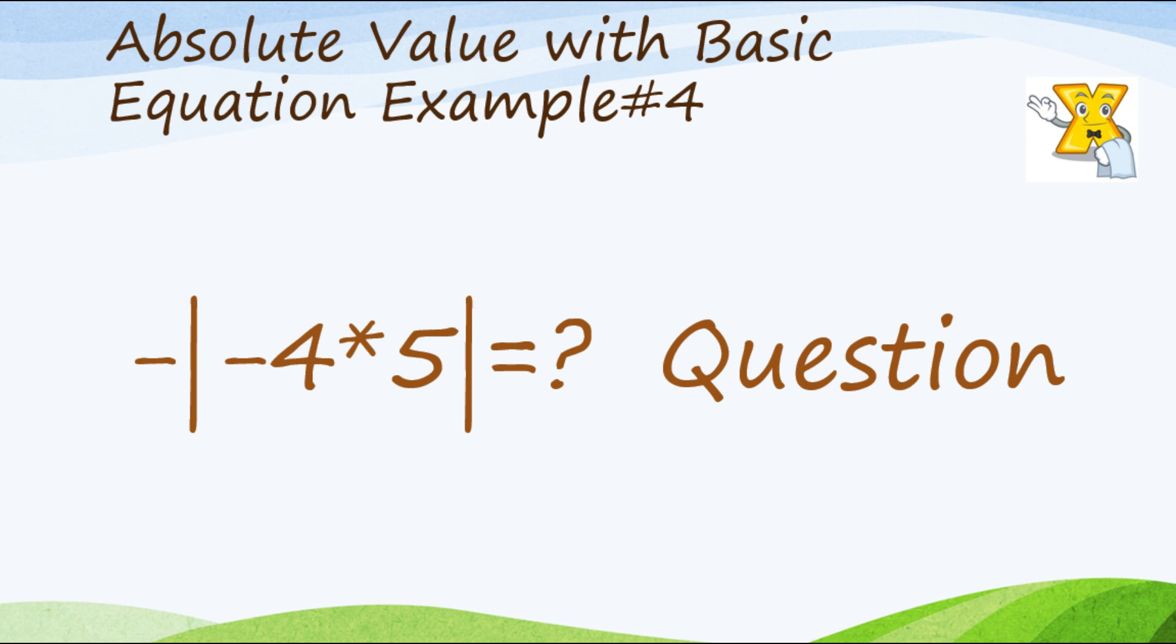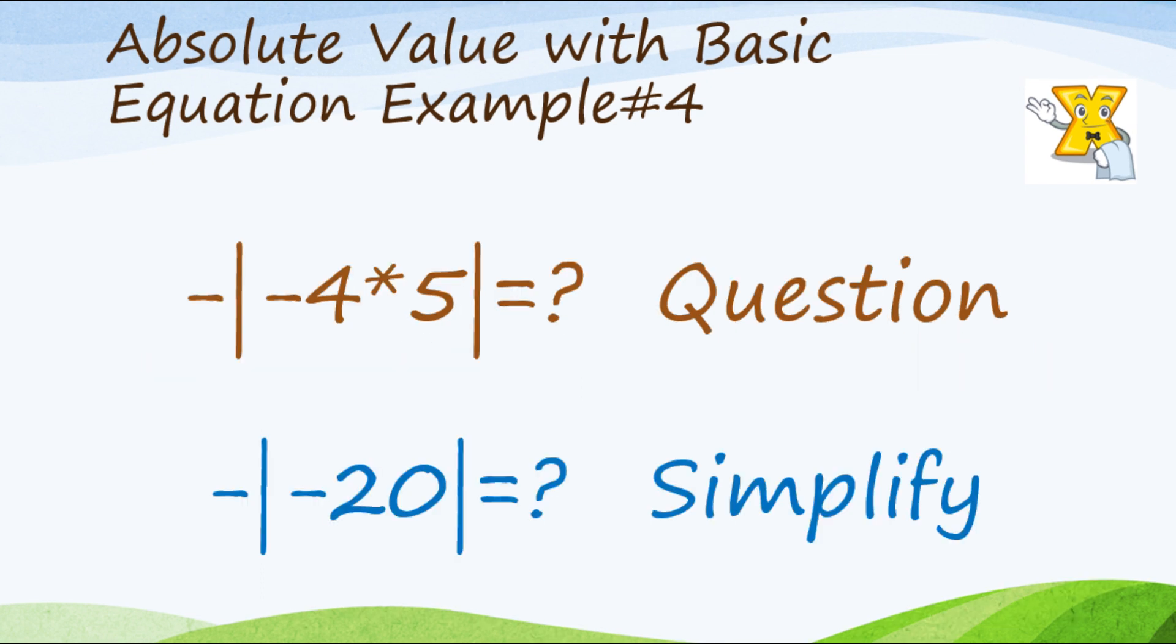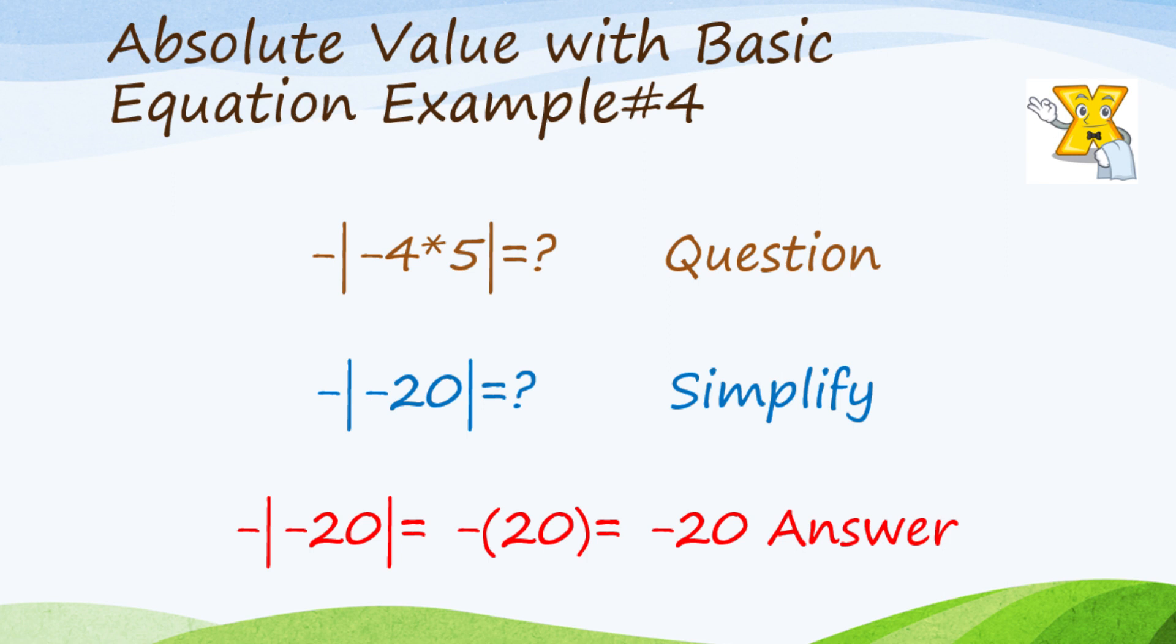So last example tayo. Paano naman kung negative tapos the absolute value of negative 4 times mo ng 5? Para gawin yan, simplify mo yung nasa loob. Yung negative 4, multiply natin sa 5, that will be negative 20. Pag nakuha na natin yung negative 20, na-simplify na natin, kuna natin yung absolute value ng negative 20 which is 20. Tapos dun mo lang ipapasok yung negative. Kasi nasa labas yung negative sign, di ba? So that will be negative 20 yung sagot.